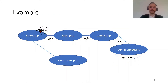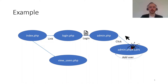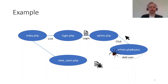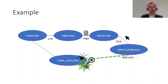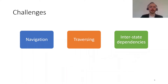We can then infer the interstate dependency between the view user page and the admin page. Of course, we want a scanner to do this autonomously — to follow links, submit forms, click on JavaScript events or buttons, add users, and continue crawling until it finds inserted values. When it does, it should also infer the interstate dependencies between different parts of the application. The main challenges we identify are: navigation, traversing, and interstate dependencies.